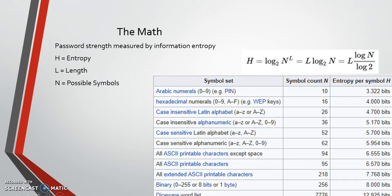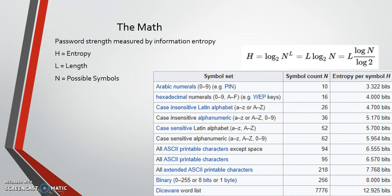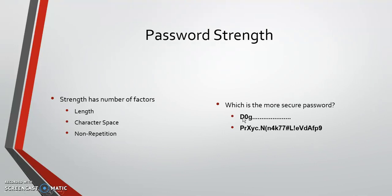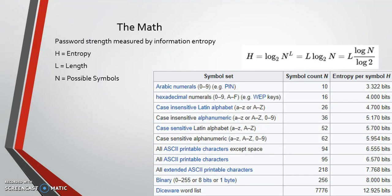Now we're moving on to the math. Password strength is measured by information entropy — how much information is gained from the length of the password and other characteristics. The formula is log base 2 of N raised to the L, where N is the number of possible symbols and L is the length of the password. That actually goes back to our first question. The dog password is actually one character longer, and because they use the same character space — a capital letter, a lowercase letter, a digit, and special characters — since one is one character longer, it is that many times more secure.